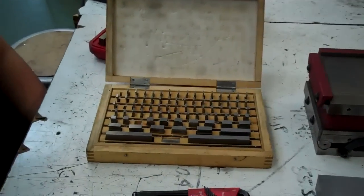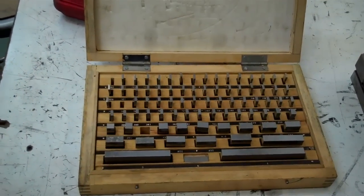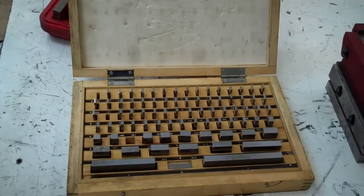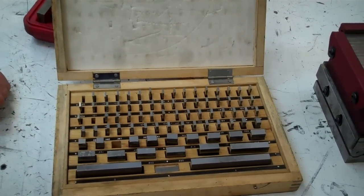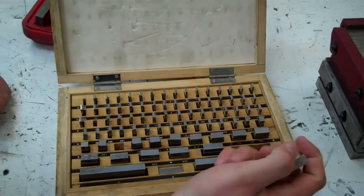We come over here to our gauge block selection, and Mr. Dugan here is going to show us where the 2 inch and the 1/2 inch blocks are. He's going to get those, and he's going to ring them together.